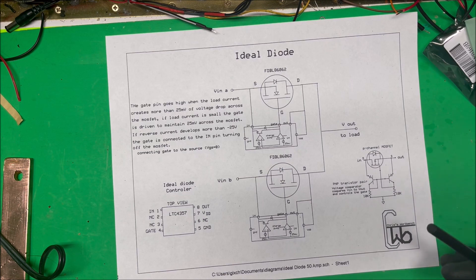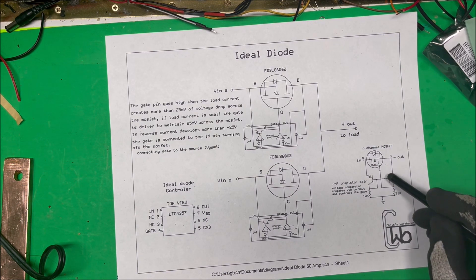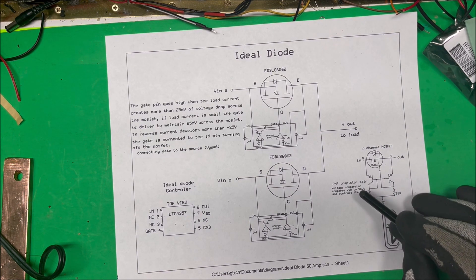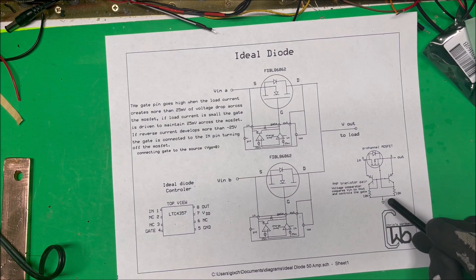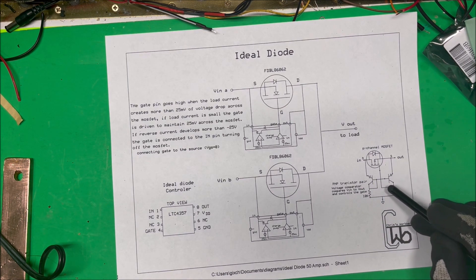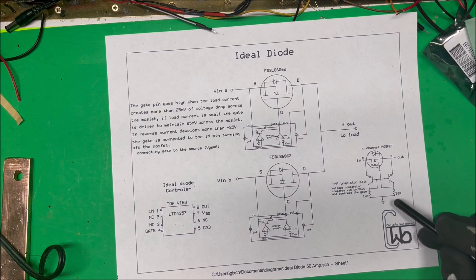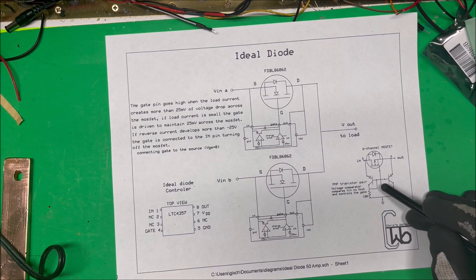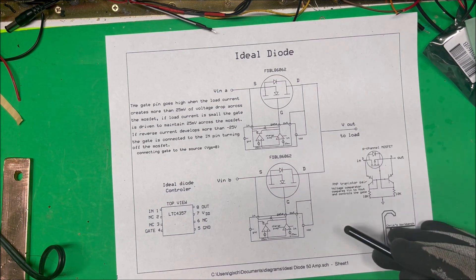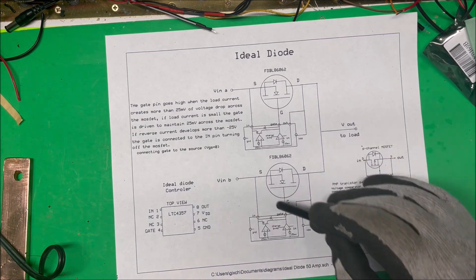The only other way to do it, or another way to do it, is to use a P-channel MOSFET and an NPN transistor pair. These come in a package together because they have to be matched. But it doesn't drain the gate as fast as this system here. These chips are made for these ideal diodes, so this is the way to go and it seems to be working out fine that way.